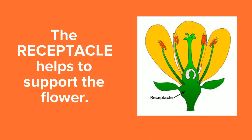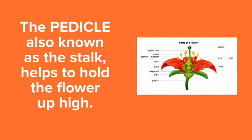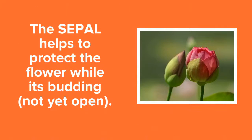The receptacle helps to support the flower. The pedicle, also known as the stalk or the stem, helps to hold the flower up high. The sepal helps to protect the flower while it's budding or while it's opening.